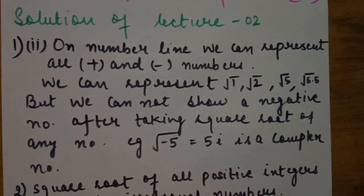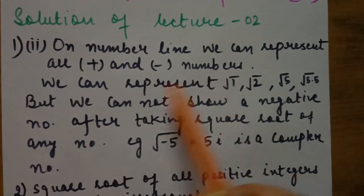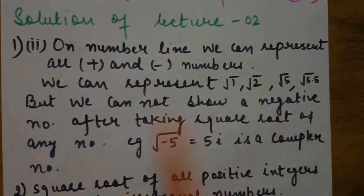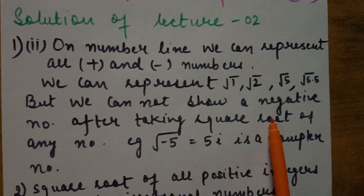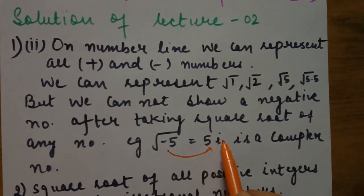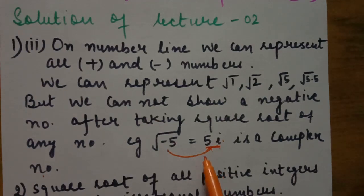First question, second part — true or false: every point on the number line is in the form of √m where m is a natural number. My answer is no. On the number line we can represent all positive and negative numbers. We can represent √1, √2, √5 but we cannot show a negative number under a square root on the number line, as that gives a complex number studied in higher classes. So the answer is false.